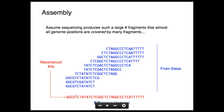Now if we knew where every one of these reads came from in the genome — if we knew that this read covers the first base through to the 15th base, and that this read starts at the fifth base, and so on — it would be really easy to do the reconstruction. We could just merge all of these sequences along the genome to stitch it back together, walking along these ordered fragments until we've reconstructed a whole genome.